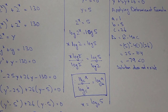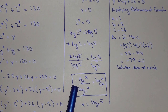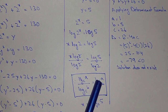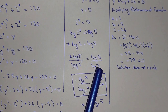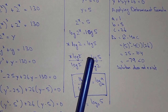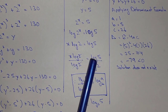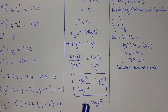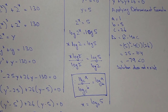Using the change of base property: log a base c divided by log b base c equals log a base b. Applying this here, log 5 divided by log 2 becomes log 5 base 2. So the final answer is x equals log 5 base 2. This is the value of x and the final answer. I hope you understand. Thank you for watching this video.